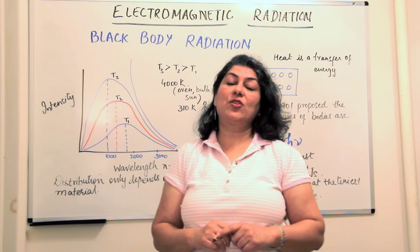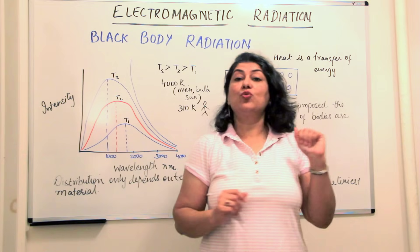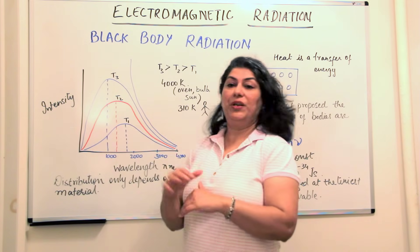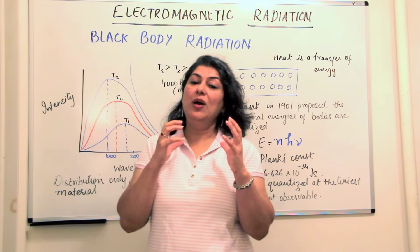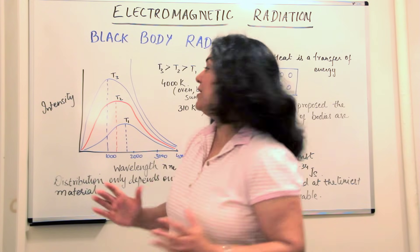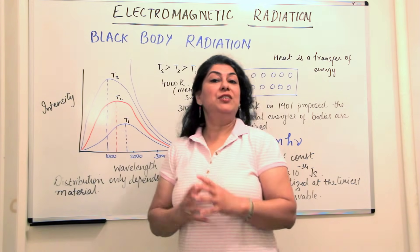There was a scientist called Max Planck and in 1901, he studied the black body radiations and he tried to give an explanation for this peaking and then the sudden dip.